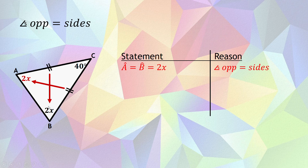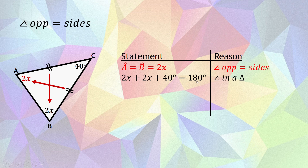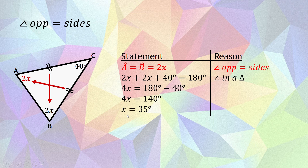From there, I can work out x by using angles in a triangle. So 2x plus 2x plus 4t should all add up to 180 degrees because the angles in a triangle add up to 180 degrees. So 2x plus 2x gives me 4x. Take the 4t over and subtract it, and you get 4x equals 140 degrees. Then divide through by 4 to get x alone. So your main three reasons are: angles in a triangle, exterior angle of a triangle, and angles opposite equal sides.